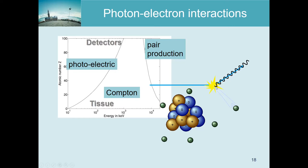In Compton interaction, the electron takes part of the energy of the photon, and the rest of the energy is emitted as another photon with lower energy than the original. So you could say the photon is deflected and at the same time loses energy, meaning its wavelength is a bit longer.